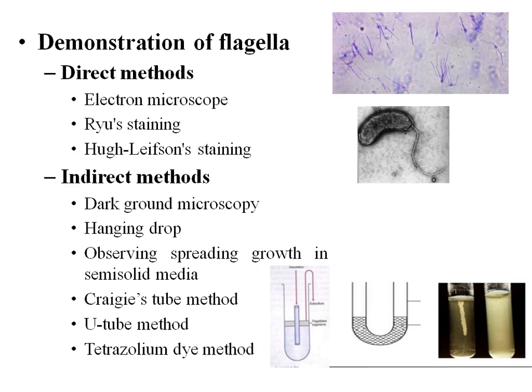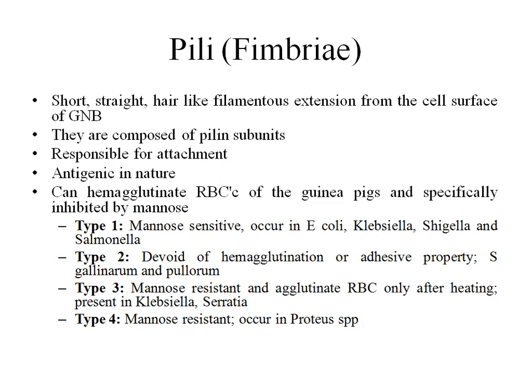Demonstration of flagella is most commonly asked as a five-marks question in practicals, as well as a three-marks question in theory examinations. There are direct and indirect methods of demonstration. The direct method is by electron microscopy or direct staining techniques like Ryu staining or Leifson staining. Indirect methods involve demonstrating motility — for example, darkroom microscopy, hanging drop, spreading growth on semi-solid media, Craigie's tube method, or using tetrazolium dye incorporated into semi-solid medium.